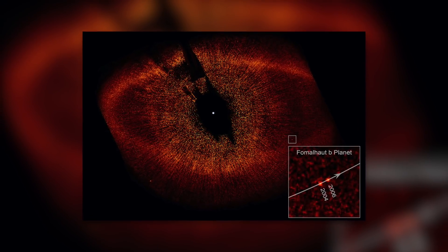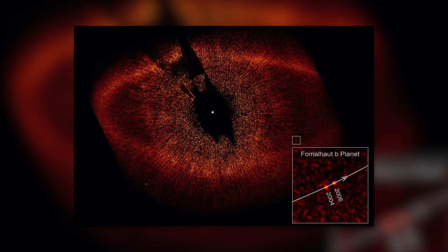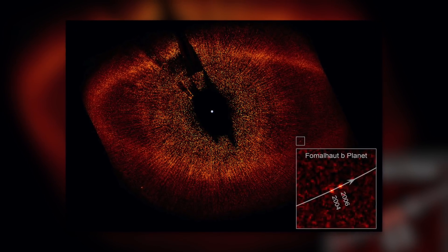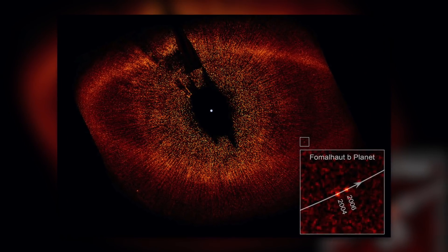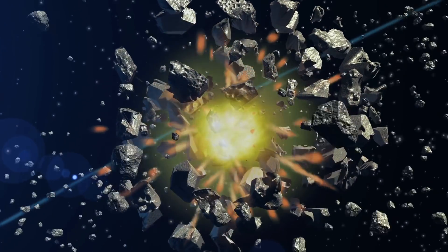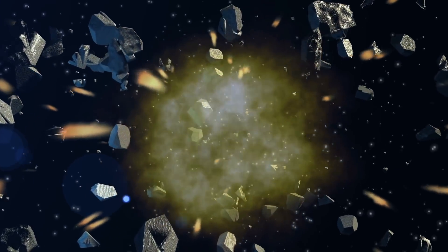The exoplanet Fummelhaut b had never existed at all. Rather, the discovery of 2004, to which computer simulations pointed afterwards, was actually a very dense dust cloud. It could have originated, for example, from the collision of two asteroids or comets,